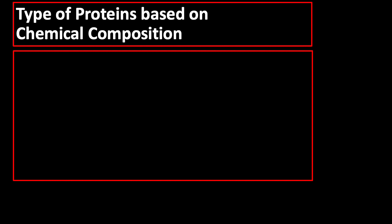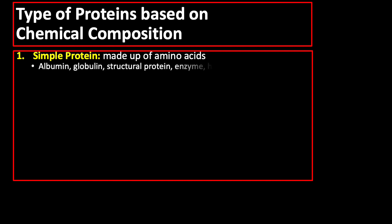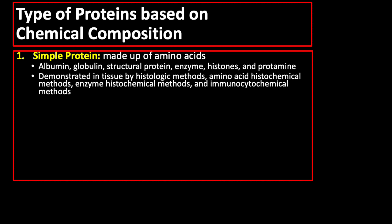Based on chemical compositions, proteins occur in tissues either as simple proteins, which are made up of amino acids. Examples of simple proteins are albumin, globulin, structural protein, enzyme, histones, and protamine. Simple proteins are demonstrated in tissue by histologic methods, amino acid histochemical methods, enzyme histochemical methods, and immunocytochemical methods.